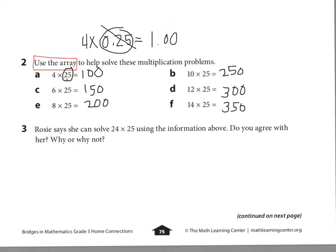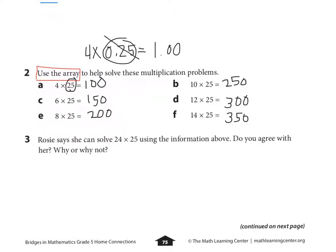Let's look down to number three. It asks, Rosie says she can solve 24 times 25 using the information above. Do you agree with her? Why or why not? And so our answer here would be we could think of it as many different ways. One way I think about it is I see, I have 14 times 25 and 10 times 25. So I can think 14 times 25 is 350 plus 10 times 25 is 250. And therefore the answer would be 600. But there are other ways that you can think about this problem as well. 24 times 25, perhaps you can think 12 times 25 doubled. But overall, I would say, yes, I agree with Rosie that you can solve 24 times 25 using this information. But you're going to write it down in your own words.